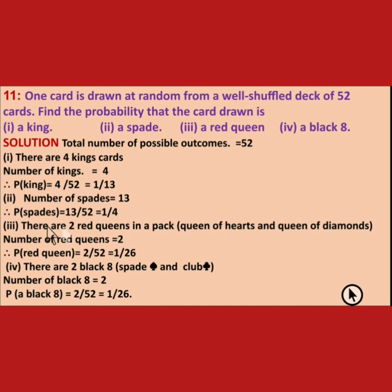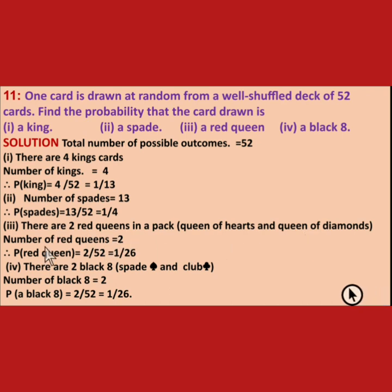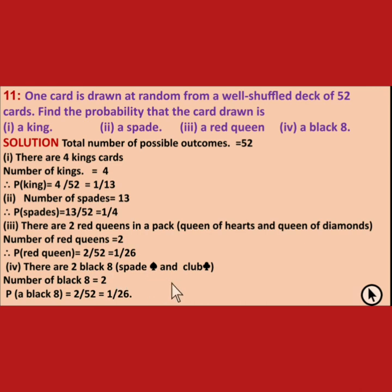A red queen: there are 2 red queens — one queen of hearts and one queen of diamonds. Probability of a red queen is 2 upon 52, which simplifies to 1 upon 26. A black 8: there are 2 black 8s — one of spade and one of club. Probability of a black 8 is 2 upon 52, that means 1 upon 26.